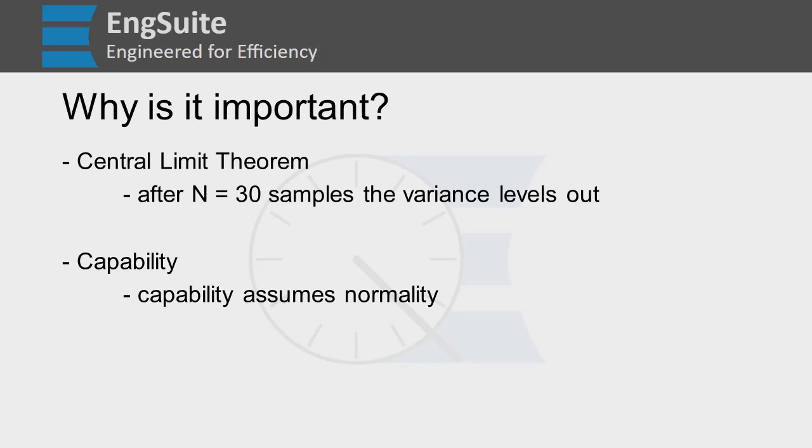The goal of engineering is to test as few samples as possible and get a valid and reliable representation of our population. So if we can assume normality, then we can assume that after 30 samples, our variance should level out to a negligible point where we only need 30 samples.